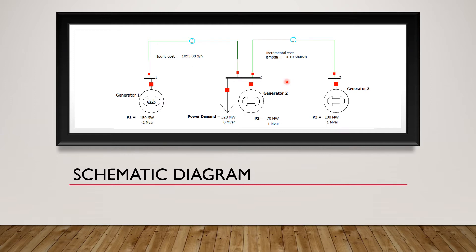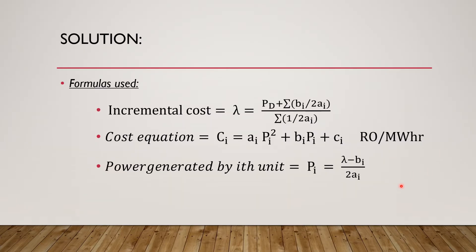Based on this schematic arrangement, we are going to make a model using Power World Simulator. These are the formulas used for manual calculation. Here we are calculating incremental cost using power demand PD, cost coefficients AI, BI, and CI, assuming DI equal to 0. We use the cost equation to calculate the hourly cost of generation PI — the power generated by the ith unit. In this example, P1, P2, and P3 are the three generating units supplying power to the load.